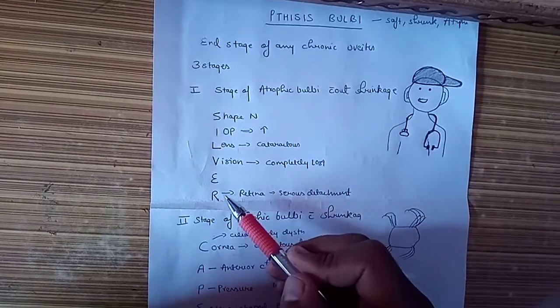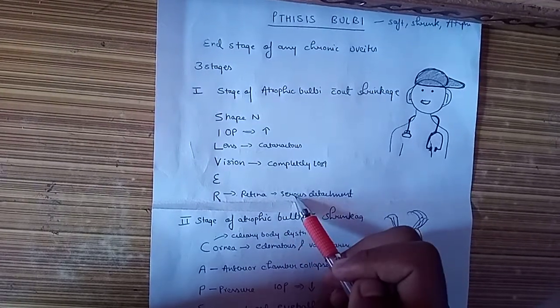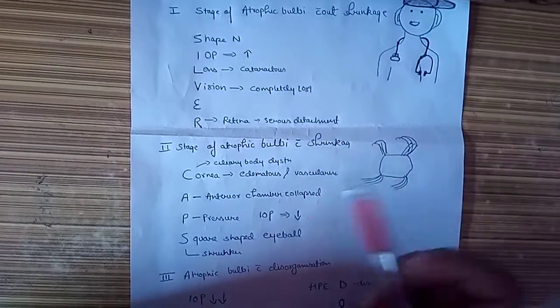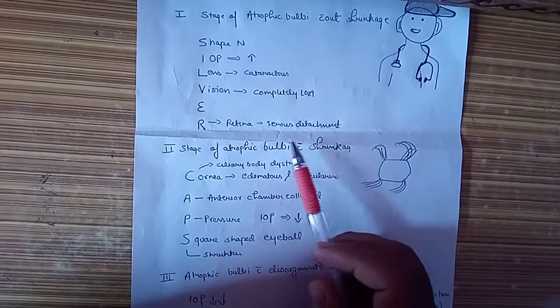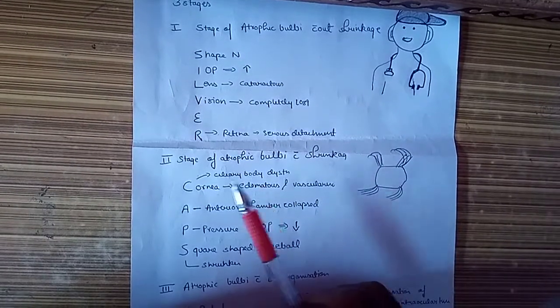R is for retina that has undergone serous detachment. The first step SILVER is completed. The second stage is atrophic bulbi where shrinkage has occurred, this is silver cap. We have to remember CAPS.